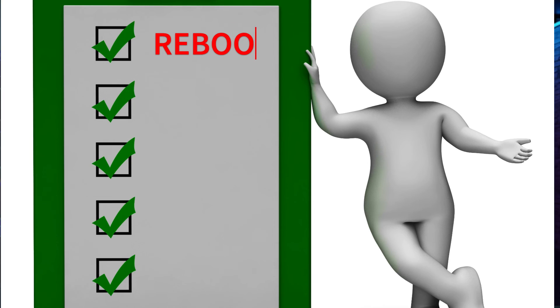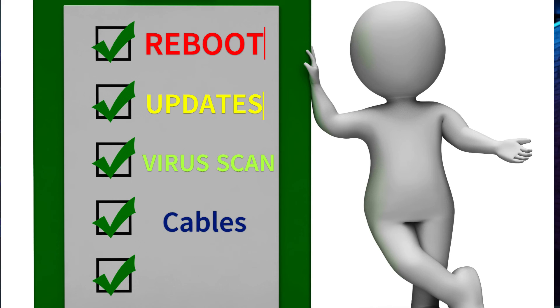So very simple — top five right there. Number one: reboot. Number two: check to make sure your software is up to date. Number three: run a virus scan. Number four: check all your connections — make sure everything's plugged in correctly and looks good. And number five: you might need to do some cleaning on your computer — get rid of those old temporary files and things you're not using. That's five simple ways that you can fix computer slowness and screen freezing on your own.